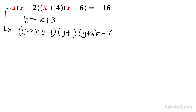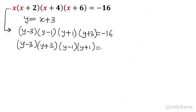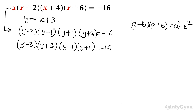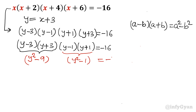Now let us write (y-3)(y+3)(y-1)(y+1) equal to negative 16. We know that (a-b)(a+b) can be written as a² minus b², the difference of squares. So I will write (y²-9)(y²-1) equal to negative 16.